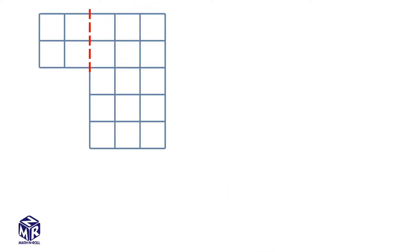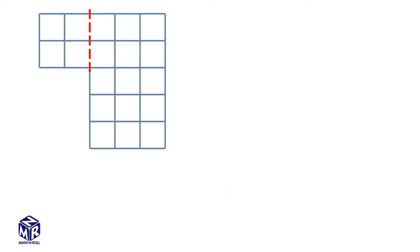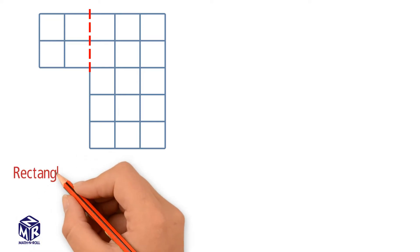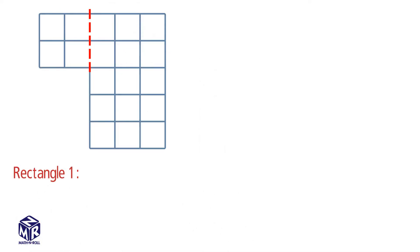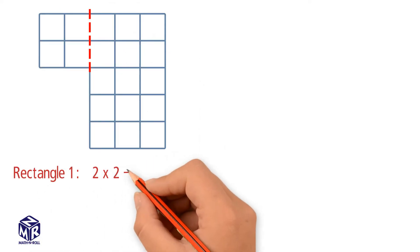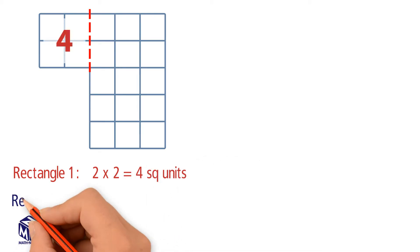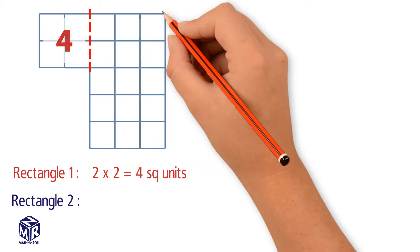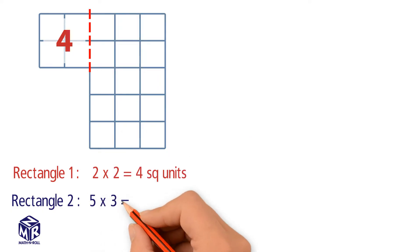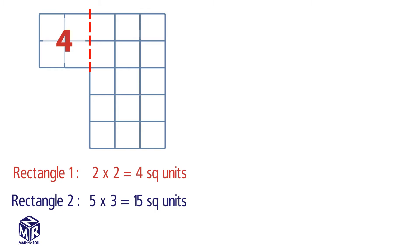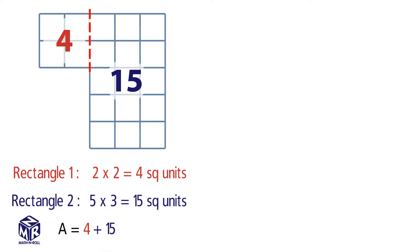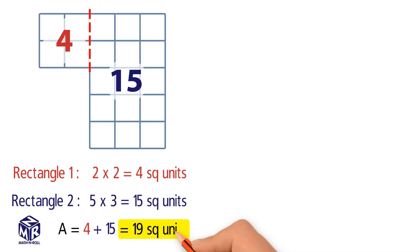Draw a vertical line to break apart the model into two smaller rectangles. The first rectangle is a 2 by 2 rectangle, so we multiply 2 times 2 to get 4 square units. The second rectangle is a 5 by 3 rectangle. We multiply 5 times 3 to get 15 square units. We add the areas of the two smaller rectangles to get the area of the figure: 4 plus 15 equals 19 square units.